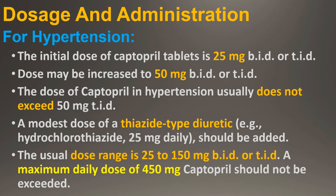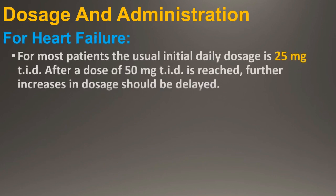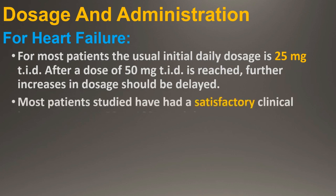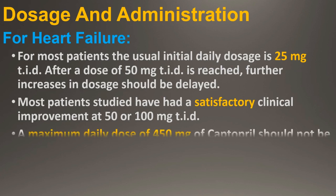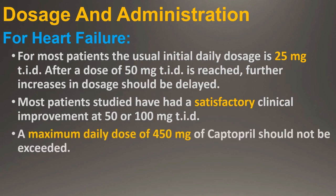For heart failure, for most patients the usual initial daily dosage is 25 mg three times a day. After a dose of 50 mg three times a day is reached, further increases in dosage should be delayed where possible for at least two weeks to determine if a satisfactory response occurs. Most patients in studies had satisfactory clinical improvement at 50 or 100 mg three times a day. A maximum daily dose of 450 mg of Captopril should not be exceeded.